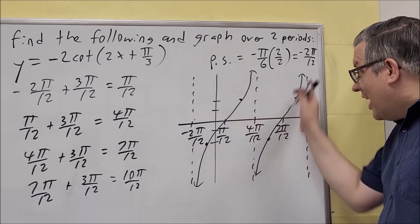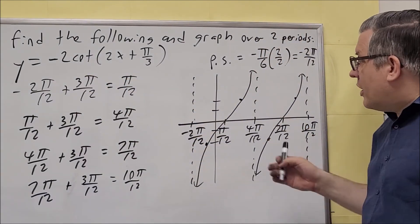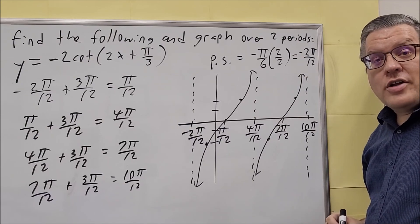They do look like tangent graphs because, again, the negative outside is what does that. The 2 that's there ended up being a vertical stretch.